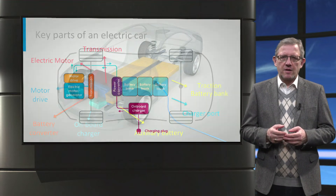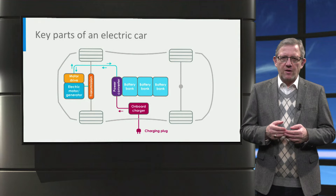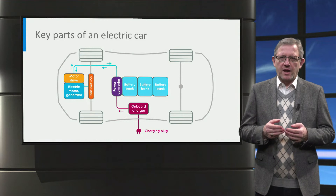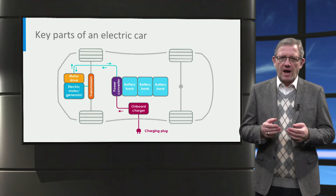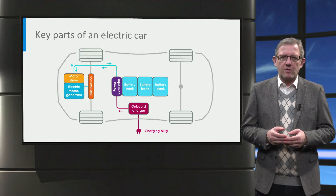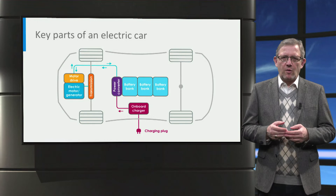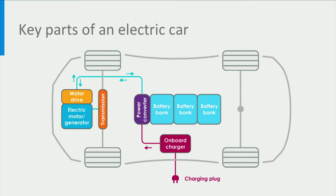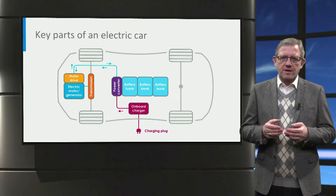The schematic shows how the different components are connected to each other in the electric car. To explain what is inside an electric car, let us follow the power flow direction and take a look at an electric car by identifying the key components.